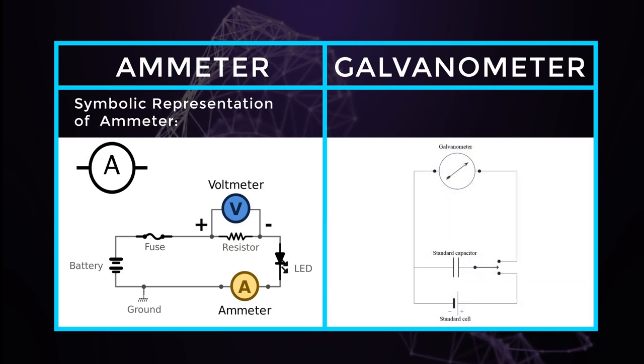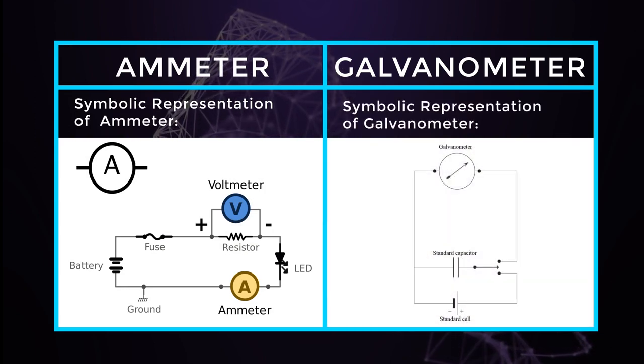Symbolic representation of ammeter is A. Symbolic representation of galvanometer is an upward arrow mark in a circle.